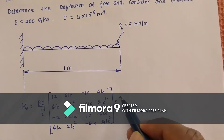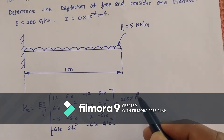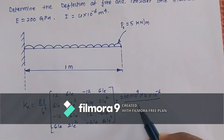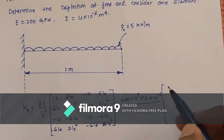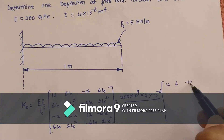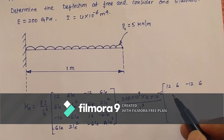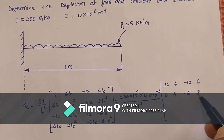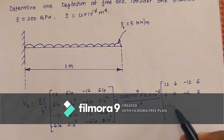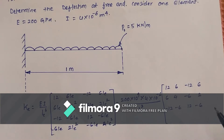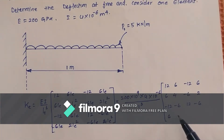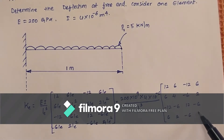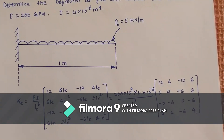Let us substitute the values. E = 200 × 10⁹, I = 4 × 10⁻⁶, and the length of the element is 1 meter. After substituting, we get the entries as: 12, 6, −12, 6; 6, 4, −6, 2; −12, −6, 12, −6; 6, 2, −6, 4. This is the stiffness matrix on substitution.